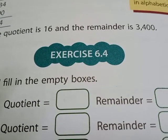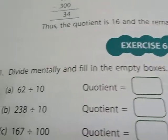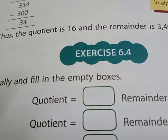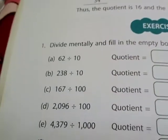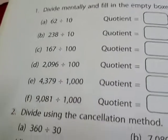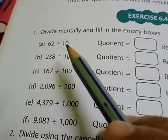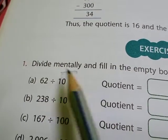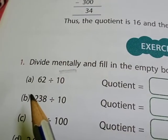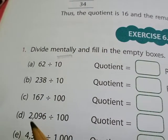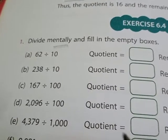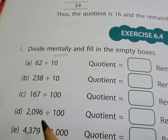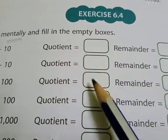Exercise 6.4, question number 1: divide mentally and fill in the empty boxes. In this question, you have to divide in your mind — mentally means divide it in your mind. Don't use copy and pen. The answer you get in your mind, write it in the quotient box, and the remainder in the remainder box.